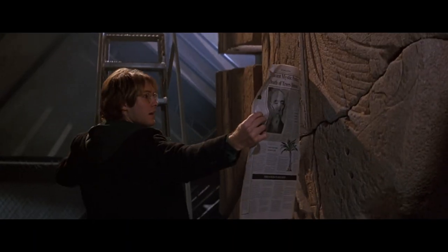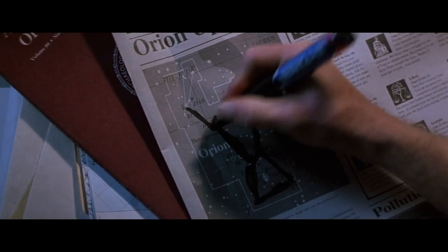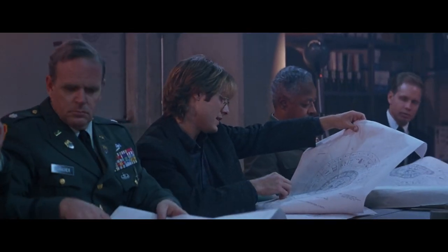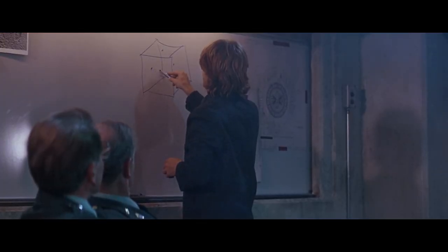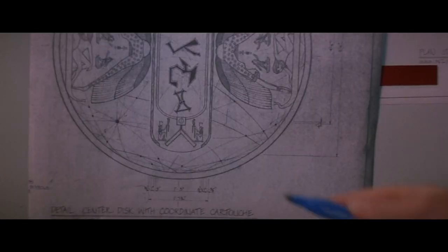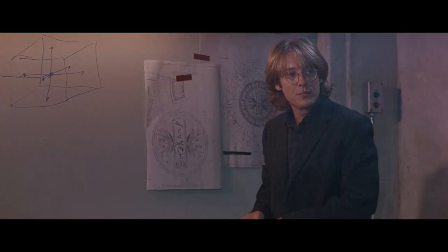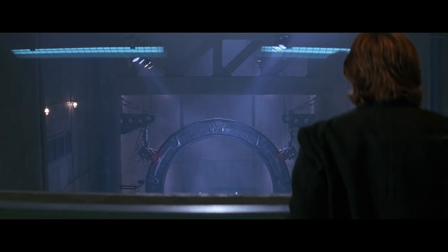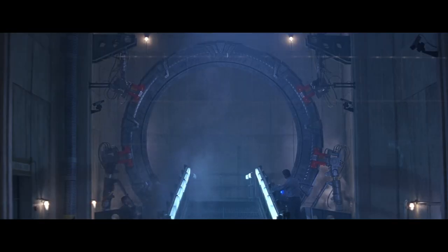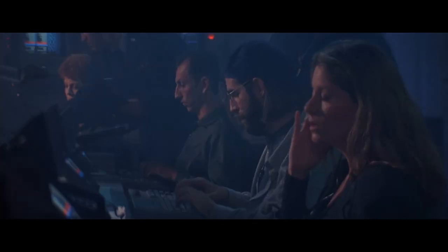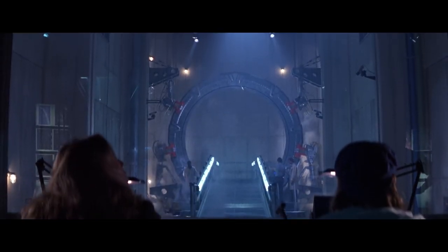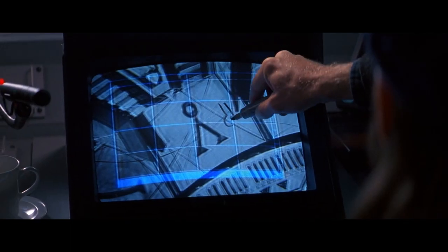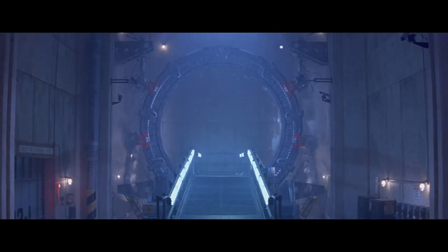Daniel works on the tablet for two weeks and discovers something massive. He explains that the six symbols on the tablet represent a location in space, and he only needs the seventh symbol — representing Earth — to accurately find the location. Everyone is impressed, and West decides to show him the stone ring, which is actually a portal called a Stargate. Covered in ancient hieroglyphics, the team had been trying to find the symbol for Earth to light up the portal. Daniel figures it out in seconds, and when they enter the correct combination into the Stargate, a portal opens.